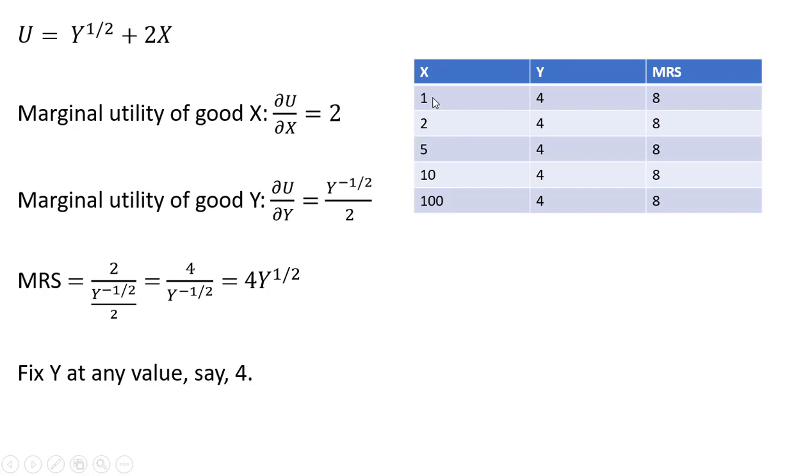So when X equals 1 and Y equals 4, we'll be on one indifference curve. And at that point, the marginal rate of substitution is 8. So I just plugged 4 into the marginal rate of substitution. There is no place to plug 1 in here for X. So the result is 4 times the square root of 4, which is just 8.